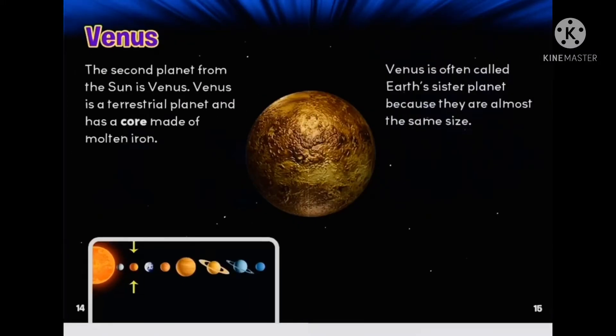The second planet from the sun is Venus. Venus is a terrestrial planet and has a core made of molten iron. Venus is often called Earth's sister planet because they are almost the same size.